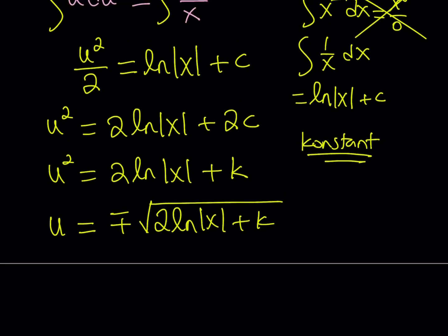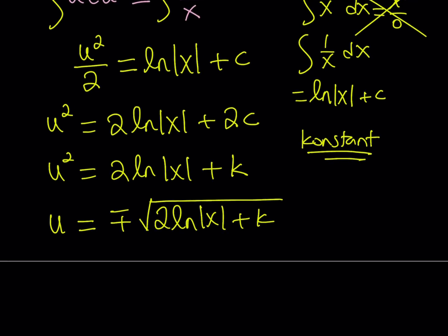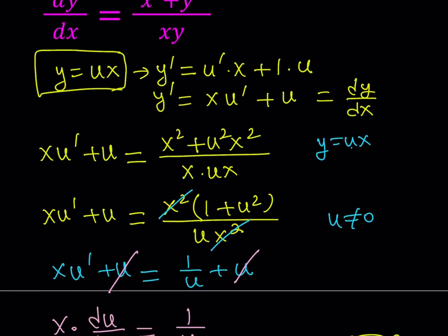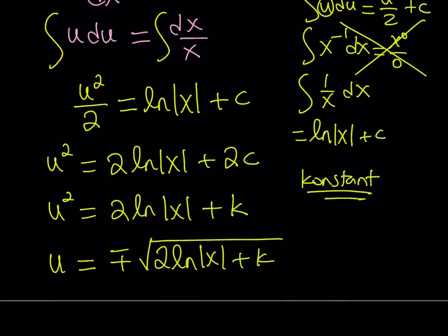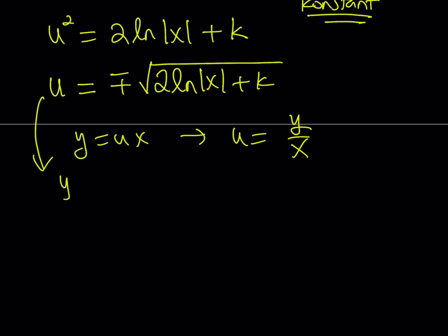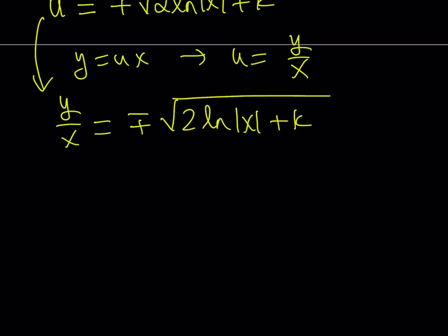I don't want the variable u. I want the y because that's the variable we're solving for. But y equals ux. Y equals ux, which means that u equals y/x. Again, y and x cannot be zero. So let's replace u with y/x. We can multiply both sides by x and we're going to get the following. And this gives us the solutions. And this brings us to the end of this video.